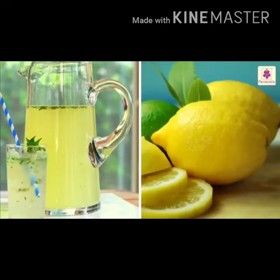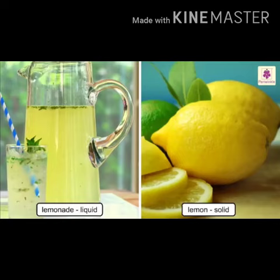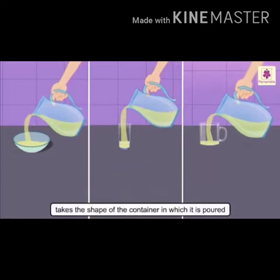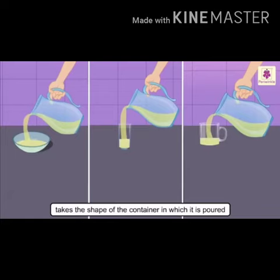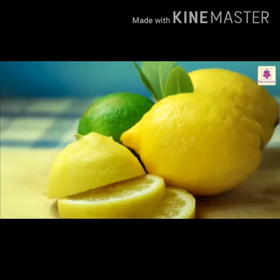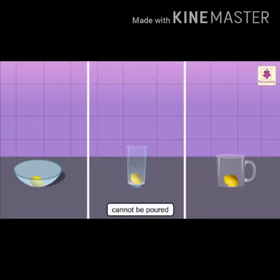So it will be easy for you to understand. You can see a lemonade that is in the form of liquid, which is extracted from lemon — lemonade is nothing but lemon juice. It takes the shape of the container in which it is poured or stored. No shape of its own. Now you can see the lemon, which is in solid form. It doesn't take the shape of the container and cannot be poured also.